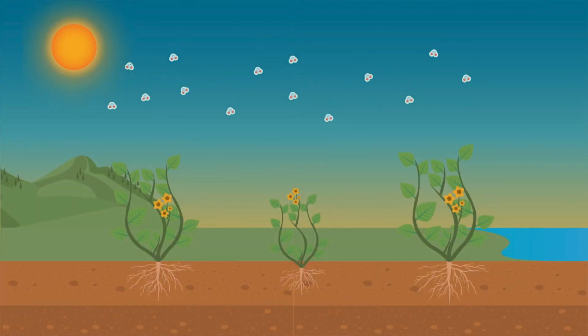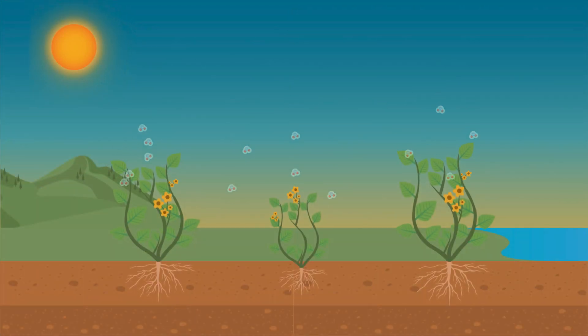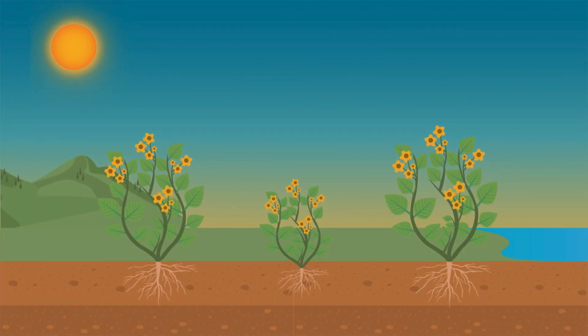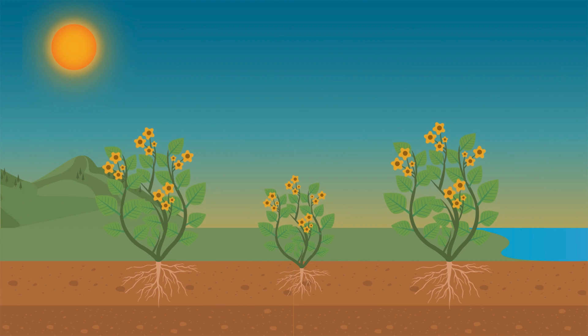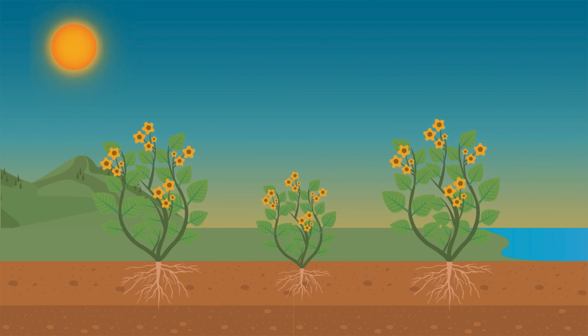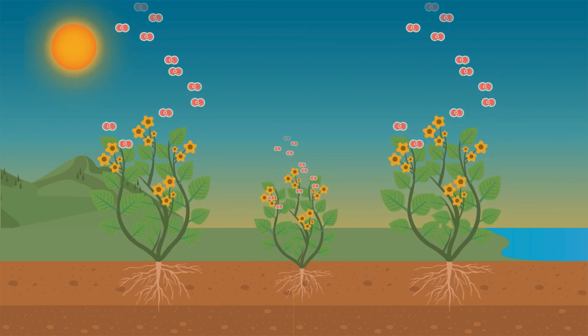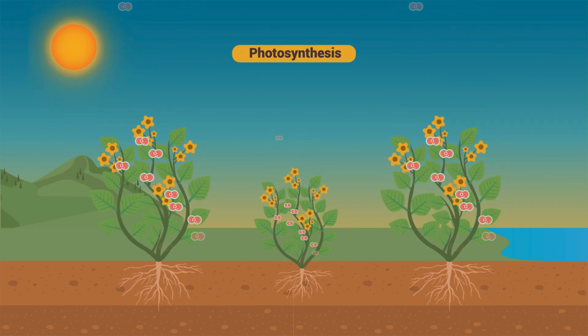Plants absorb carbon dioxide from the atmosphere to create fuel, glucose, and other sugars needed to build their plant structures, while releasing oxygen in a process called photosynthesis.